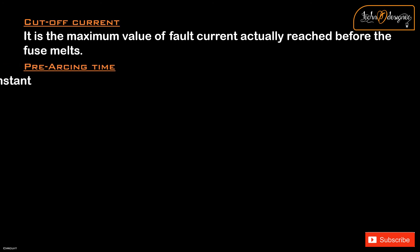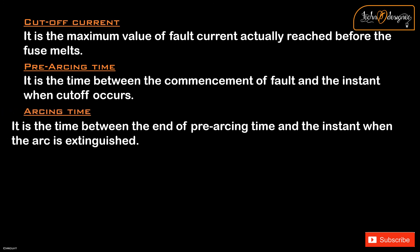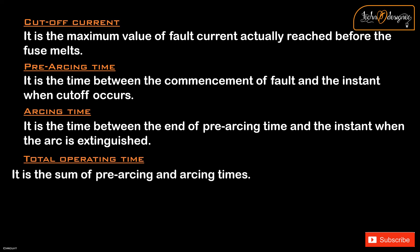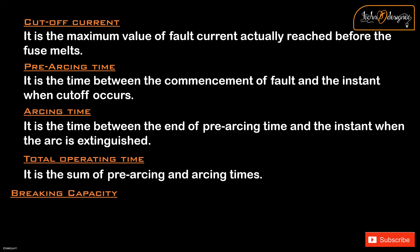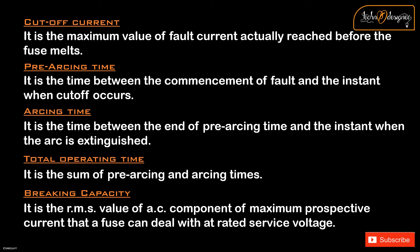Pre-arcing Time: it is the time between the commencement of a fault and the instant when cut-off occurs. Arcing Time: it is the time between the end of pre-arcing time and the instant when the arc is extinguished. Total Operating Time: it is the sum of pre-arcing and arcing times. Breaking Capacity: it is the RMS value of the AC component of the maximum perspective current that a fuse can deal with at rated service voltage.